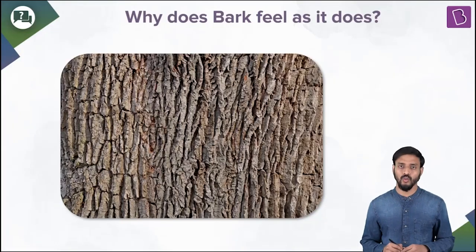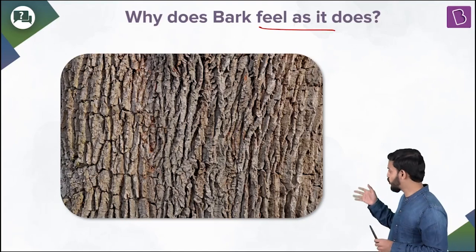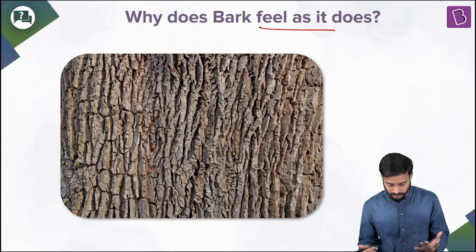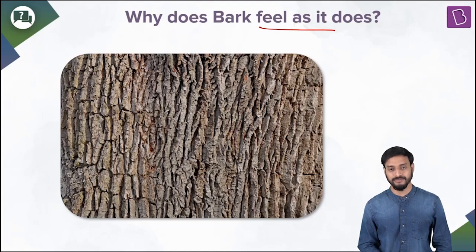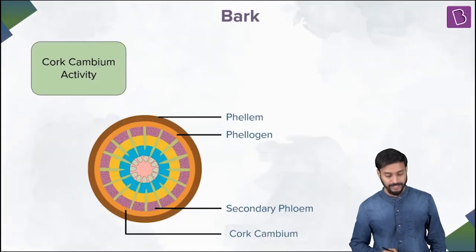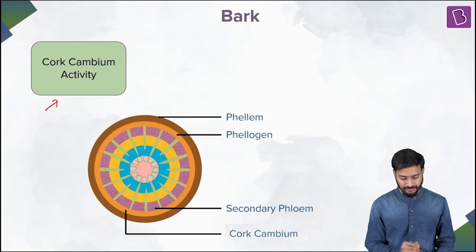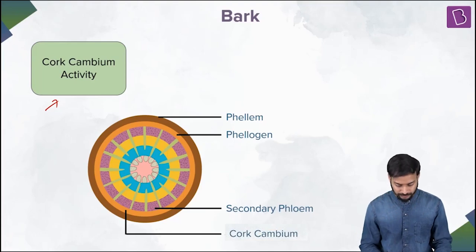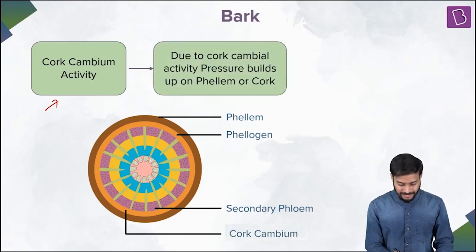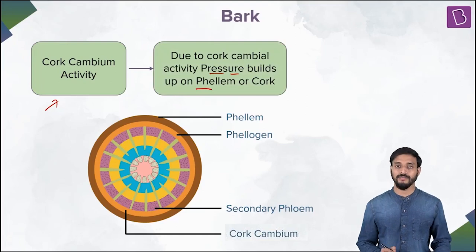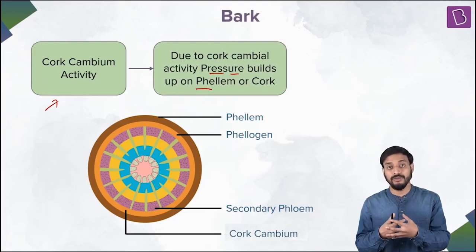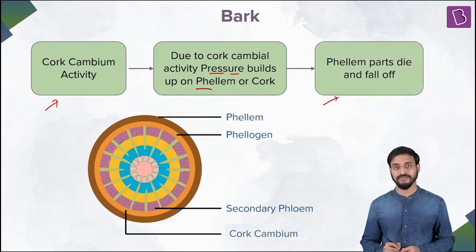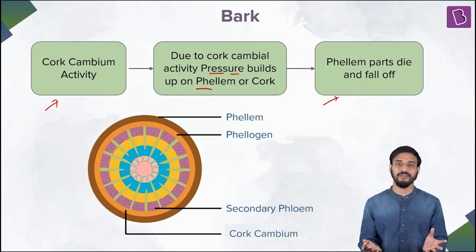Why does bark feel rough and seem to be breaking off? It's not a smooth texture — it actually falls off. Because of cork cambium activity and the increase in girth, tremendous pressure builds up on the phellem, the outer layer. Because of this pressure, the phellem parts die and fall off — that's the reason the bark falls off.